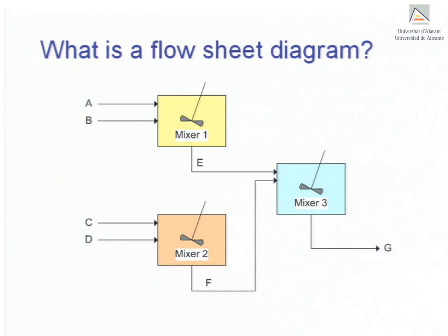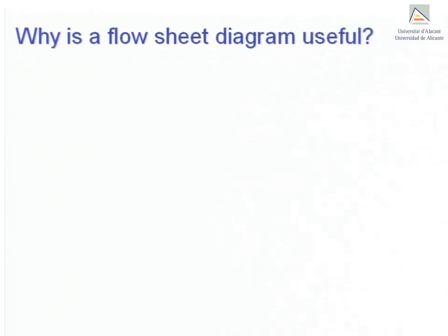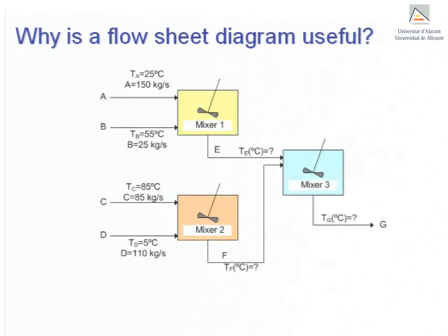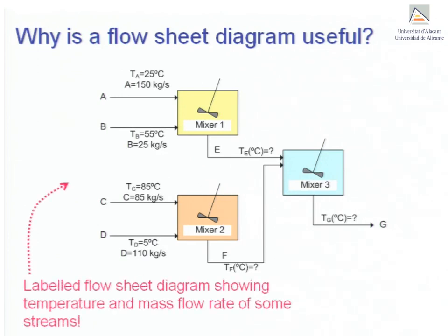Flow sheet diagrams are very useful because many details about the process may be inferred from a simple drawing. Moreover, it is also useful for organizing all the given information about the process, for instance, temperature, mass flow rates or other variables, because it can be conveniently filled in on the diagram.